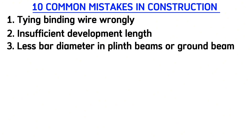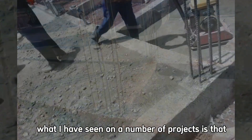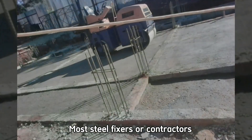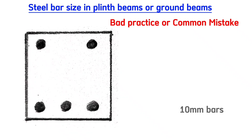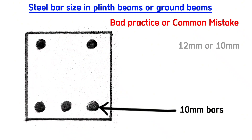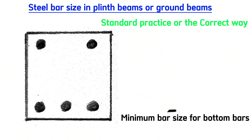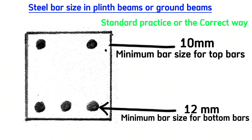Common mistake number three is using less bar diameter in plinth beams. What I have seen on a number of projects is that for the plinth beams or the ground beams, most steel fixers or contractors simply fix 10mm bars at the bottom and maybe 12mm or 10mm at the top, which is wrong. The correct version is that the minimum bar size at the bottom should be 12mm.